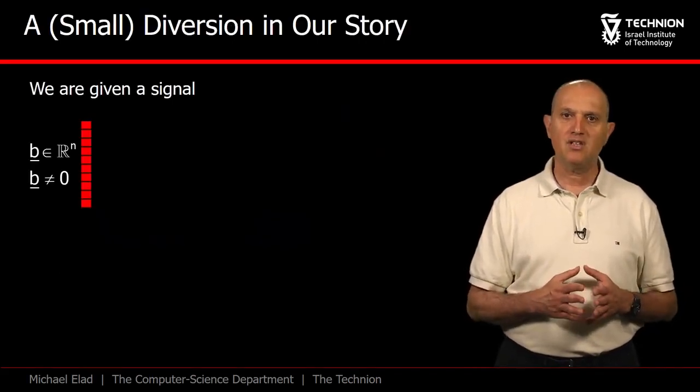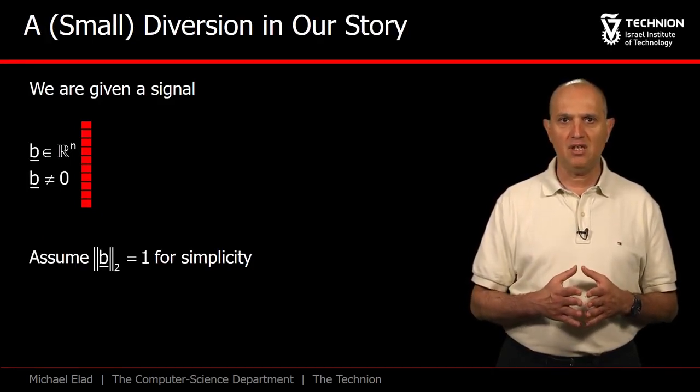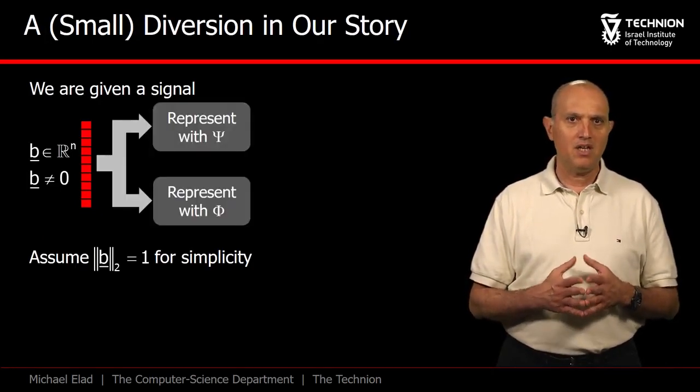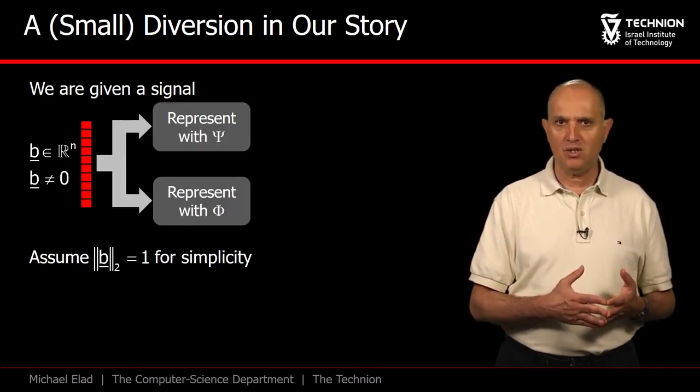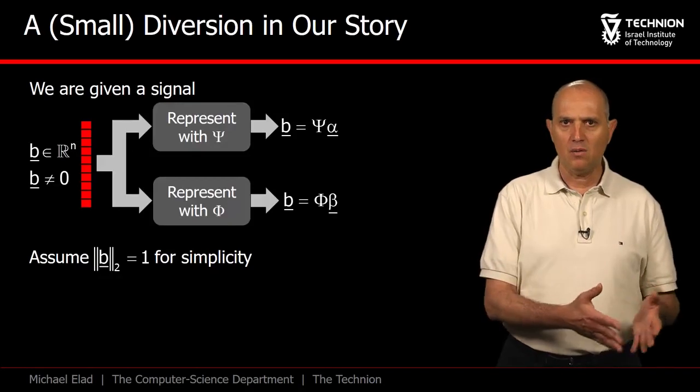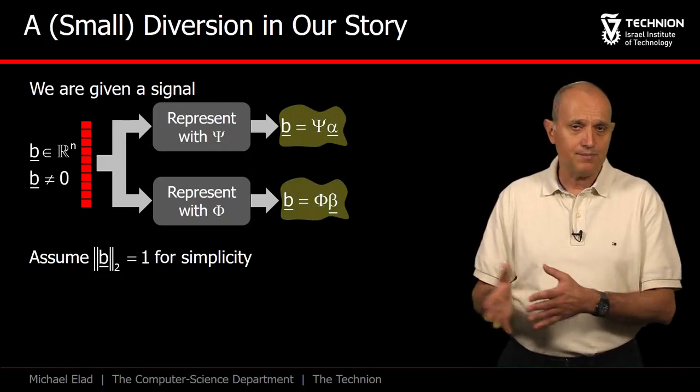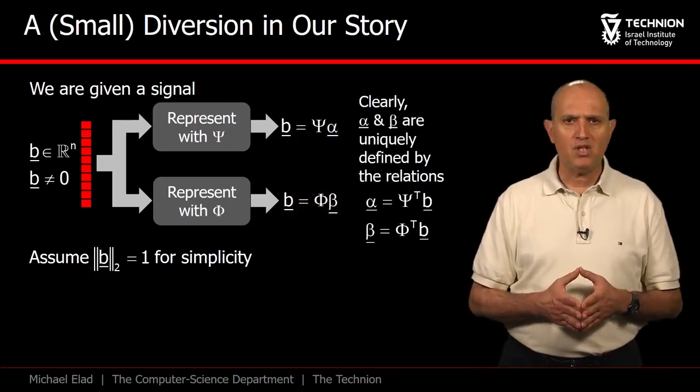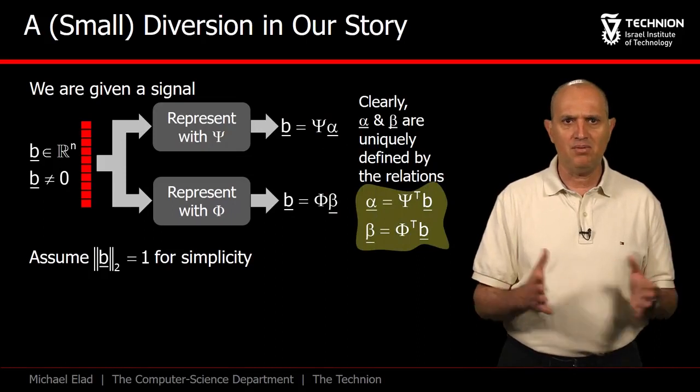Consider a non-trivial signal b of length n, and let's assume for simplicity that it is normalized. We can represent this signal using the two orthobases, and these two representations are simple to obtain: b equals Ψ times some vector α, or Φ times another vector β. There is no ambiguity with respect to these two vectors. Their computation is direct and simple.